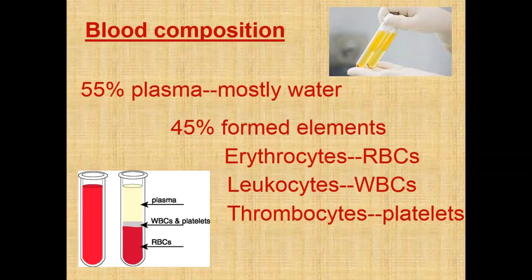Erythrocytes are red blood cells and their role is to carry oxygen. Your leukocytes are what we commonly call white blood cells — your warriors, fighters, and soldiers; they protect your body as components of your immune system. There are five different types of leukocytes and each type has a particular role. Your thrombocytes are what we commonly call platelets. Platelets are not full cells — they're just fragments of cells. Platelets are responsible for blood clotting.